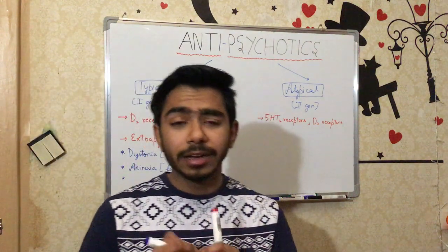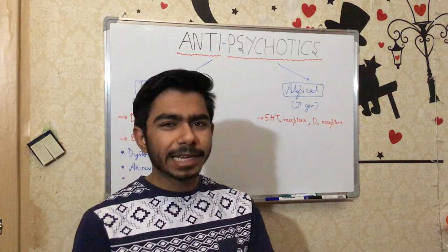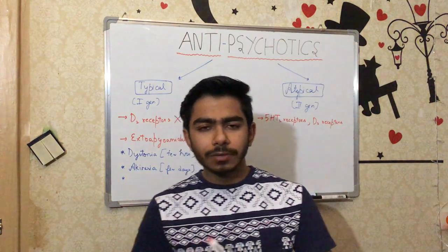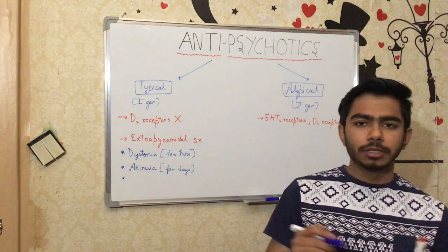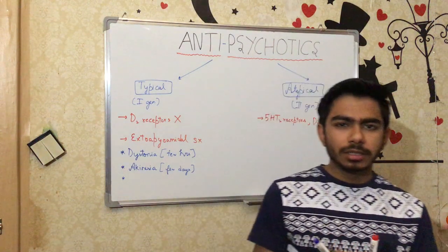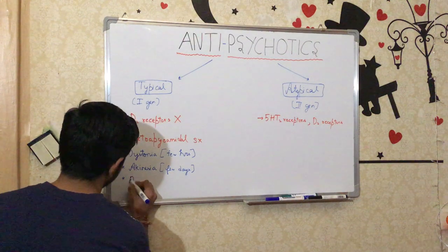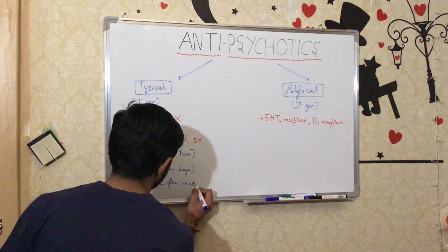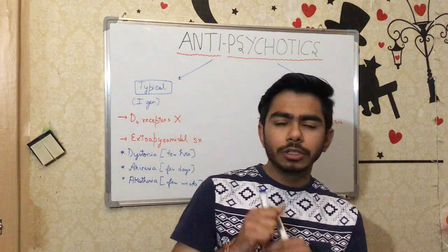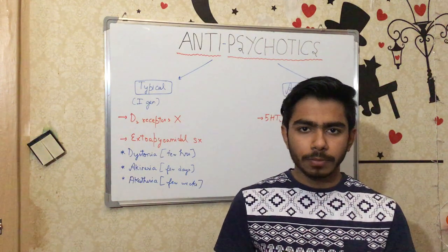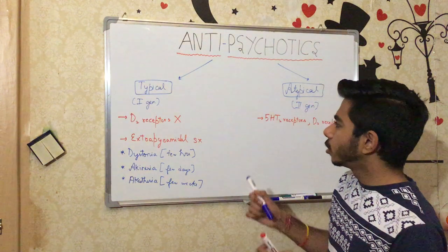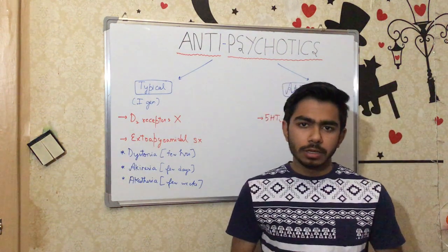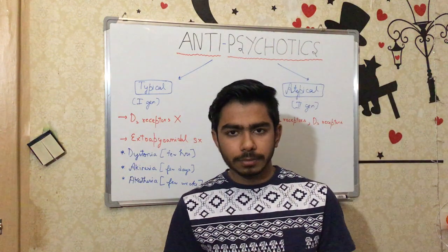Patients can also suffer from akathisia, which is restlessness in the body. These patients won't be able to stand still — they will be constantly moving, for example moving their hands or legs all the time. Akathisia appears within a few weeks. The fourth symptom is tardive dyskinesia, which is very dangerous and irreversible. The first three symptoms — dystonia, akinesia, and akathisia — can be reversible when the doctor tells the patient to stop the typical antipsychotics. But tardive dyskinesia is irreversible and appears over months to years.